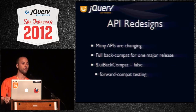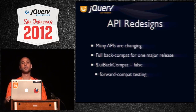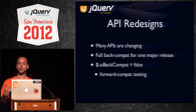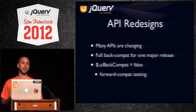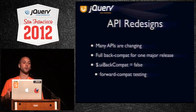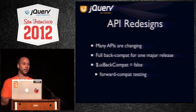If you want to find out if you're ready for when the 1.10 release comes out, you can turn off the BackCompat. You'll load up jQuery, then have a single line of script that says jQuery.UI.BackCompat equals false, then load up jQuery UI and none of the BackCompat code will load. That way you can easily find out if your code is ready for when 1.10 comes out and all of the 1.8 APIs go away.